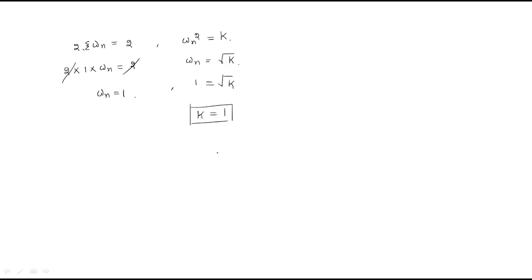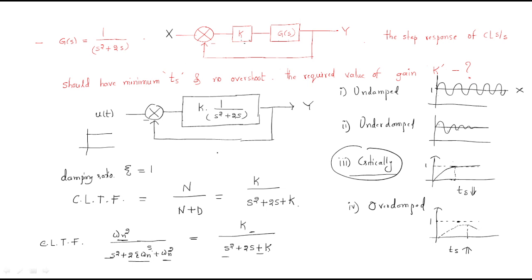This is an important model: whenever a system is described with specific characteristics, identify which type of system it is, then compare with the standard transfer function to find the solution. I hope all of you understand this session. Thank you.